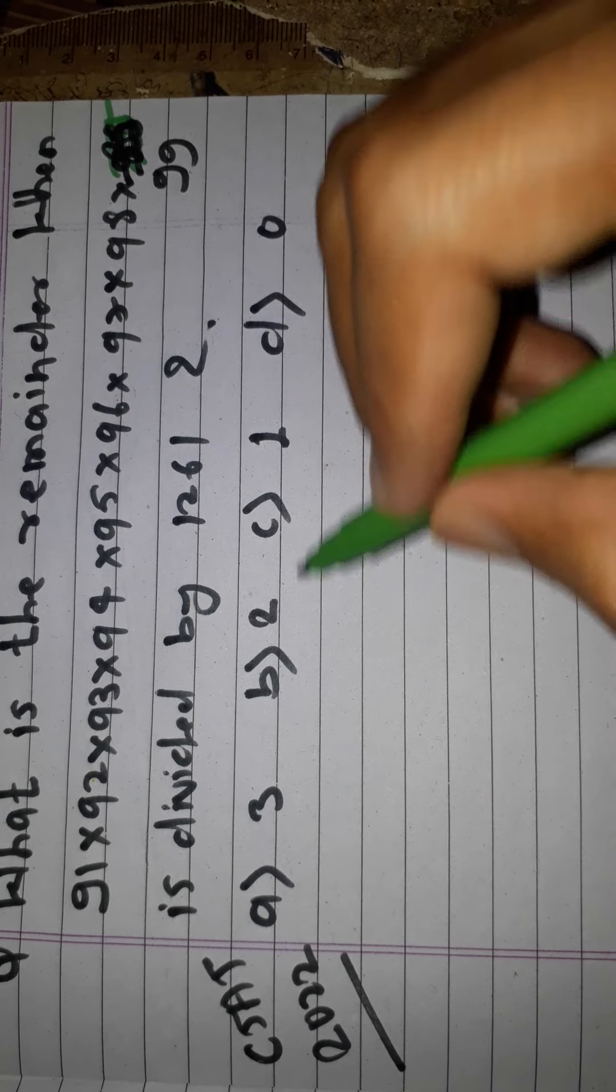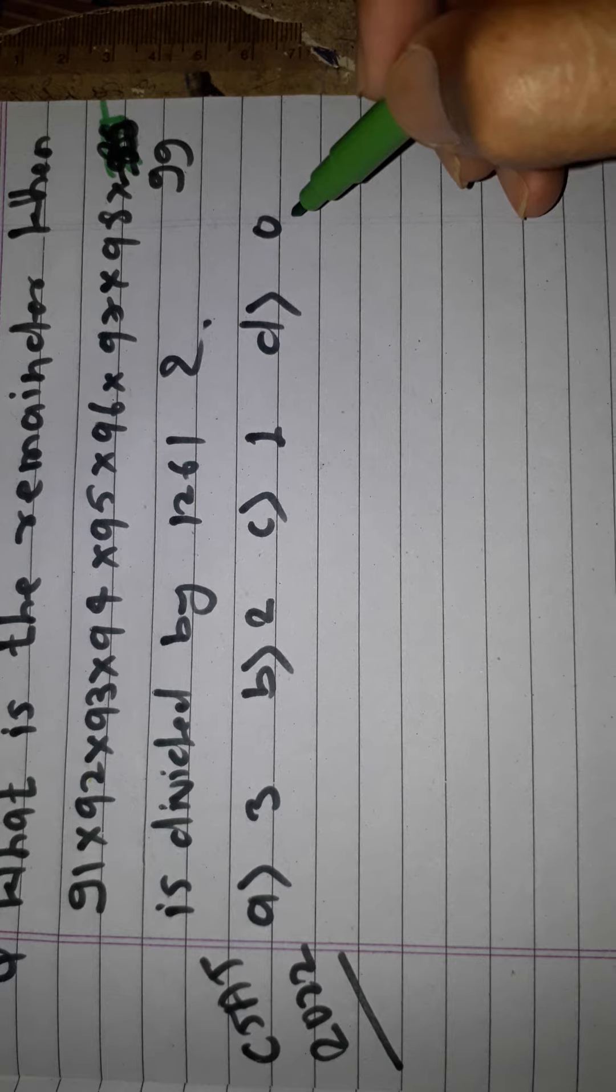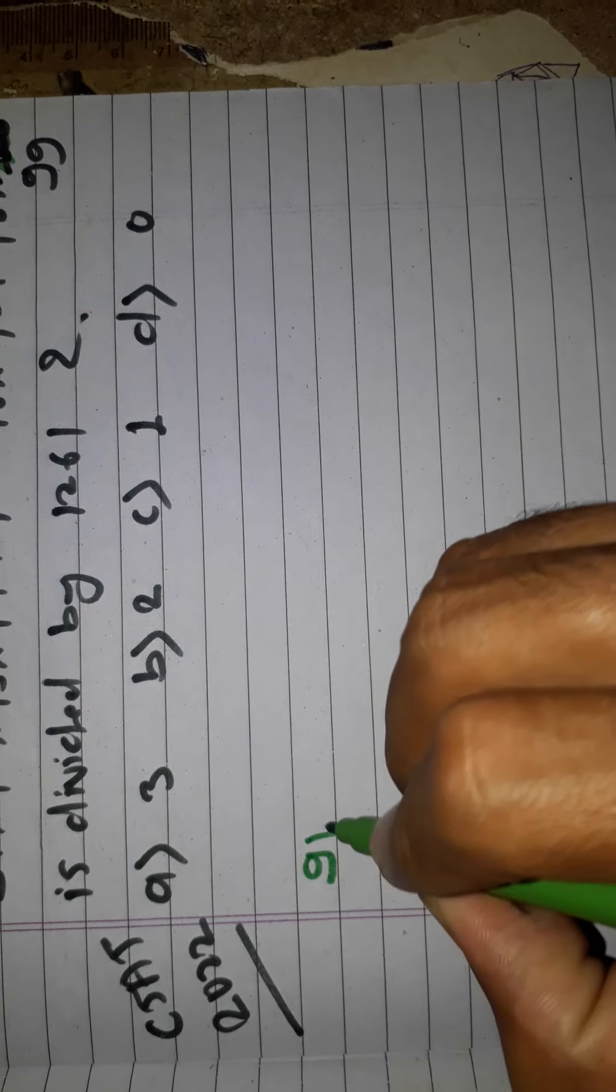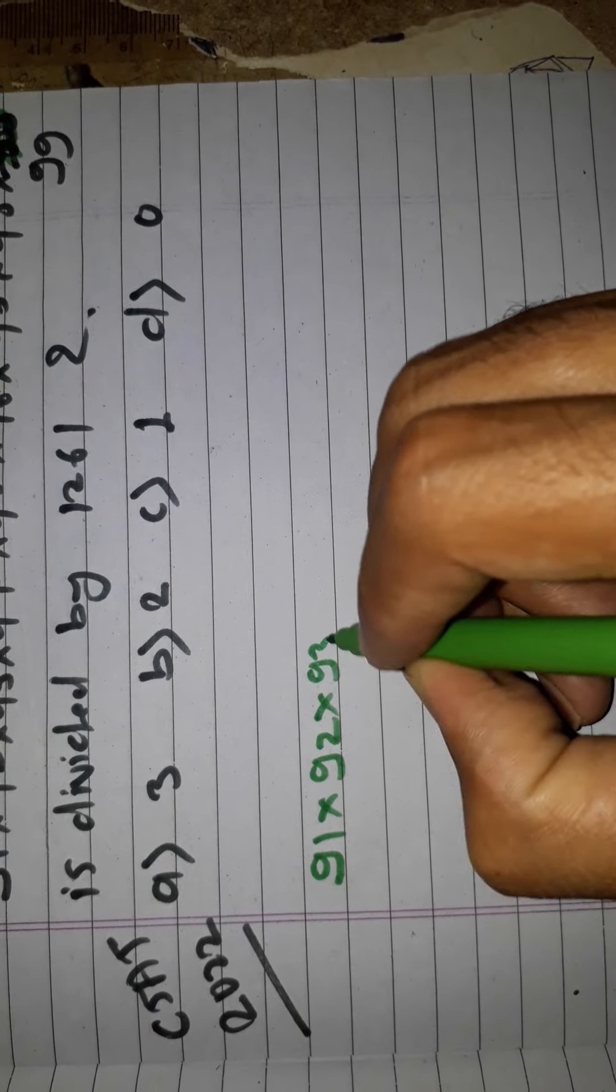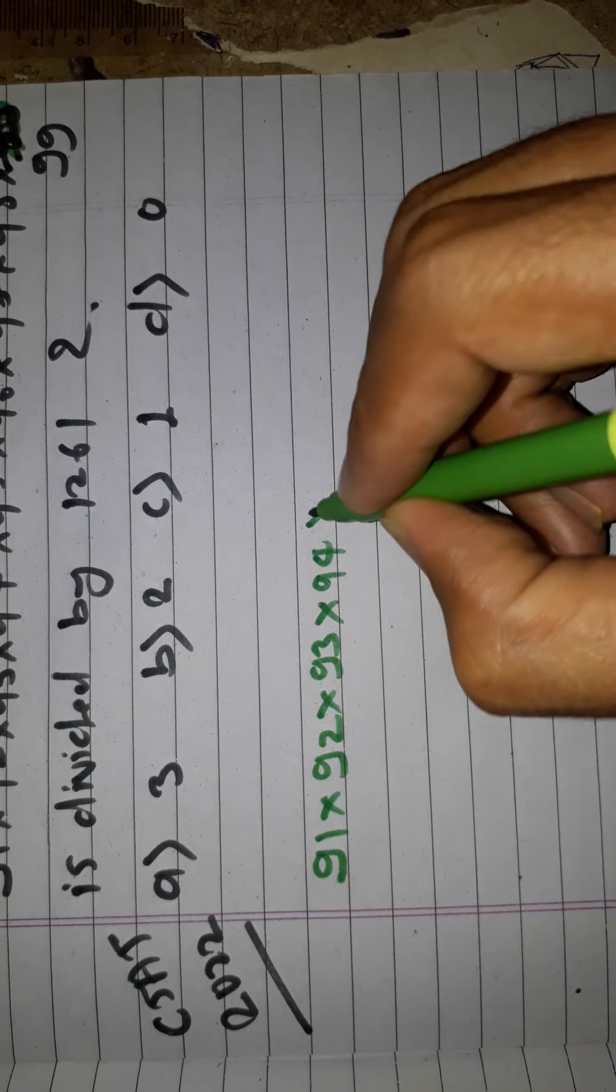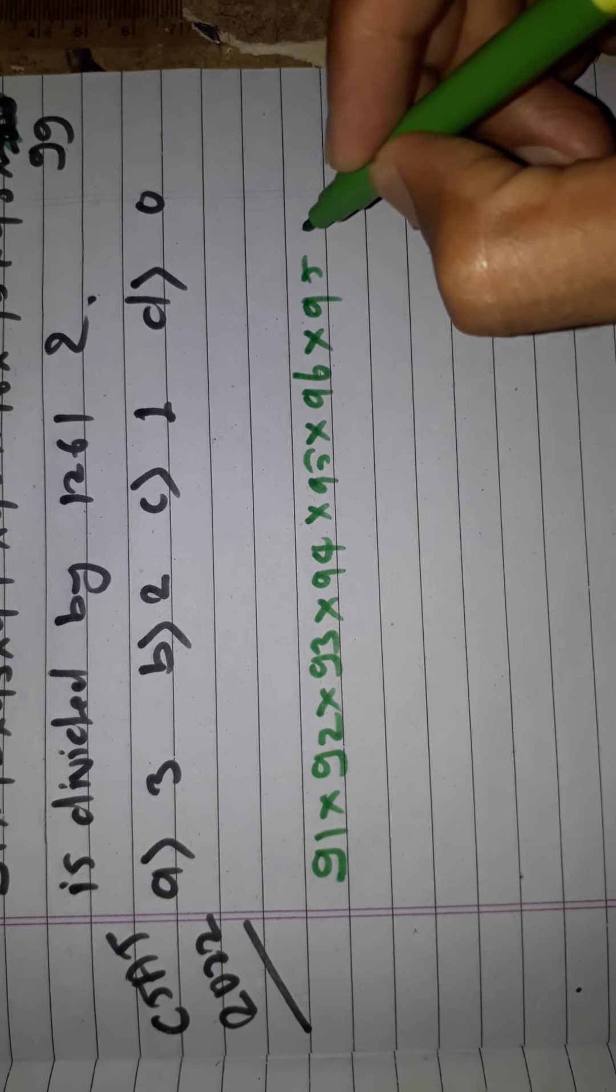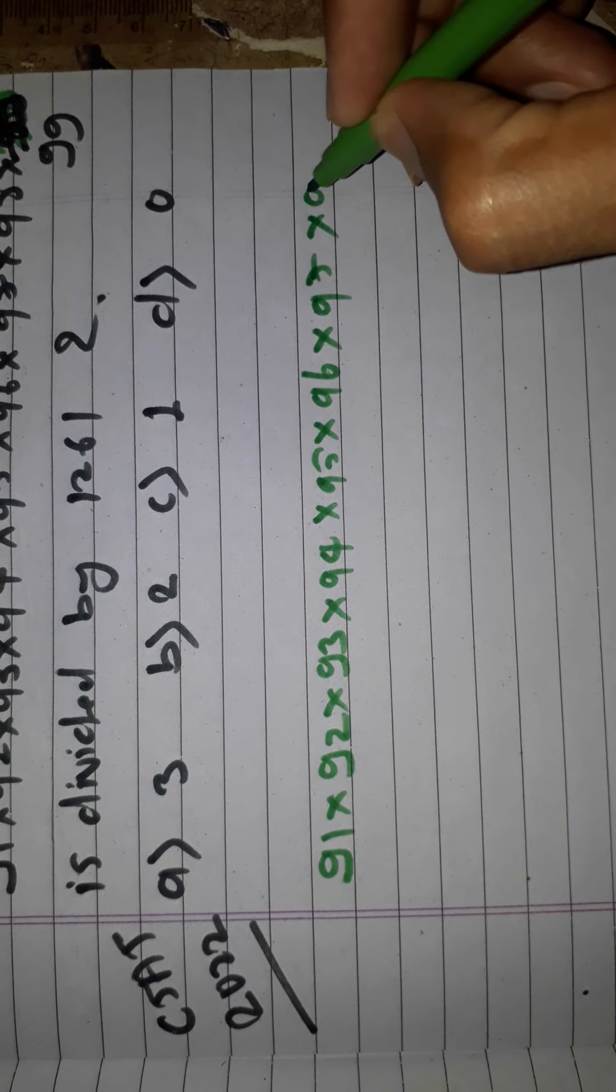The options are: first option is 3, second option is 2, third option is 1, fourth option is 0. First of all, write all the values here: 91 × 92 × 93 × 94 × 95 × 96 × 97 × 98.